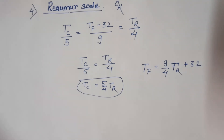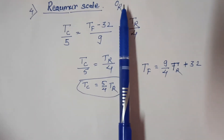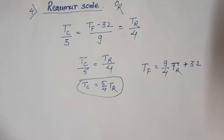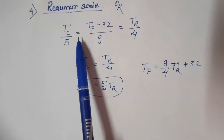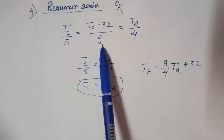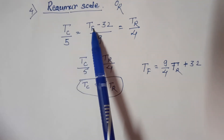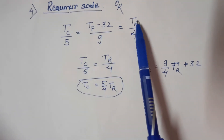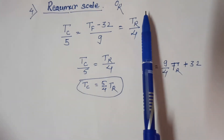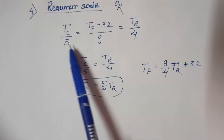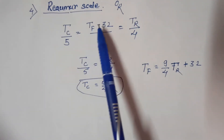The fourth temperature scale is the Réaumur scale, denoted as degree R. The relation for the Réaumur scale is: Tc upon 5 is equal to (Tf minus 32) upon 9, which is equal to Tr upon 4. Where Tc is temperature in degree Celsius, Tf is temperature in degree Fahrenheit, and Tr is temperature in the Réaumur scale. This gives conversions from Celsius and Fahrenheit to the Réaumur scale.